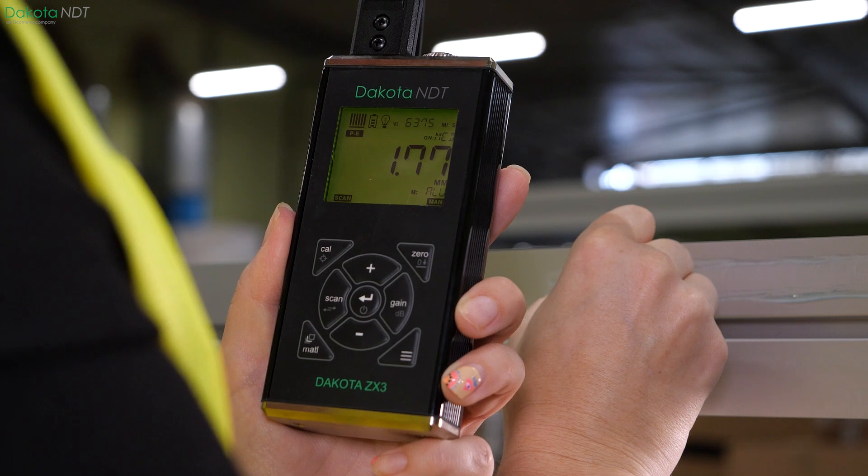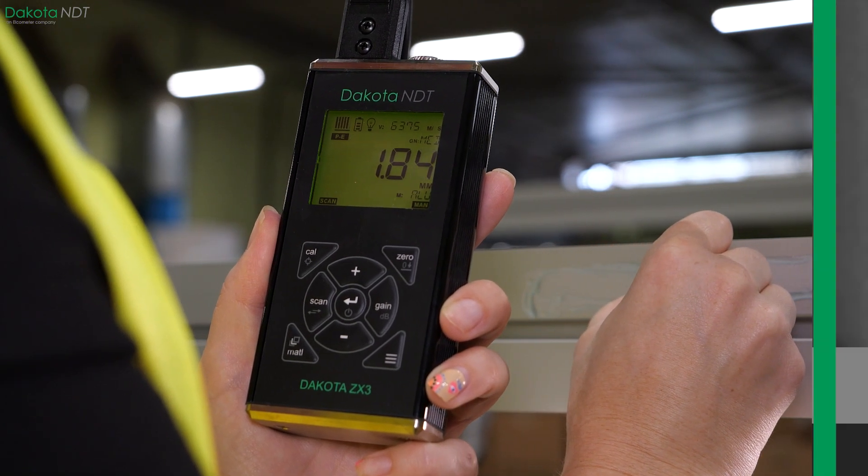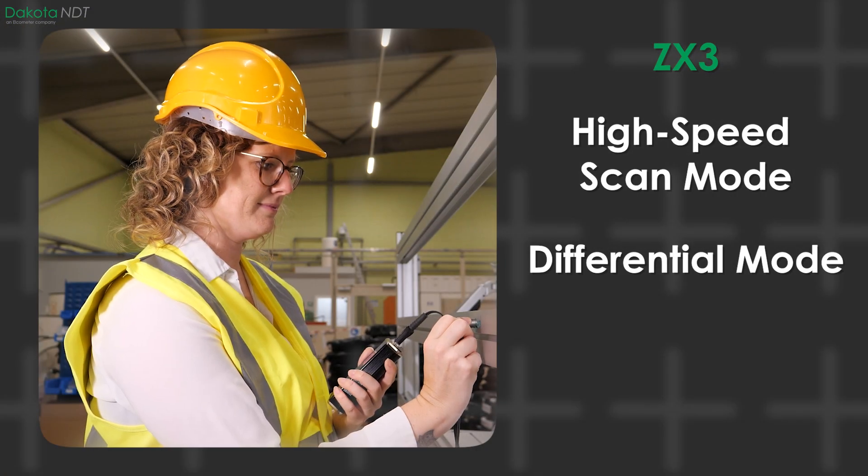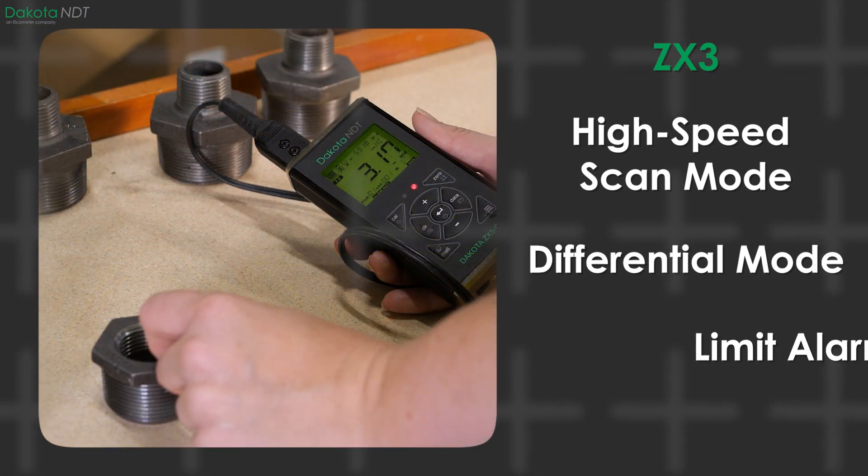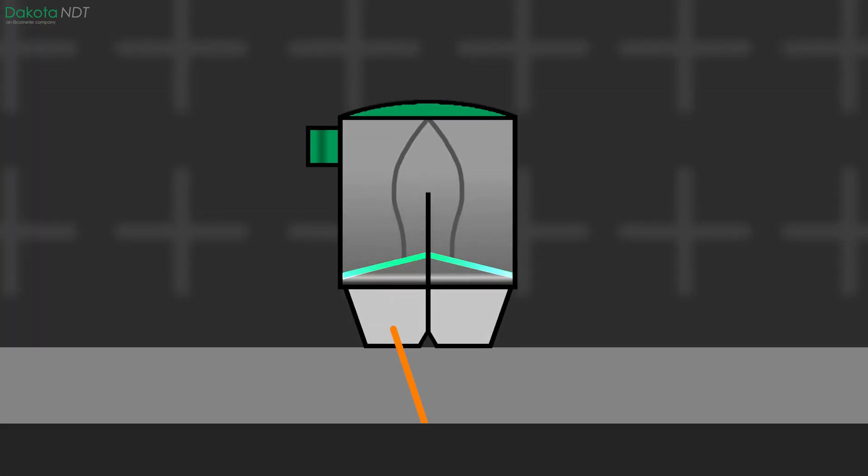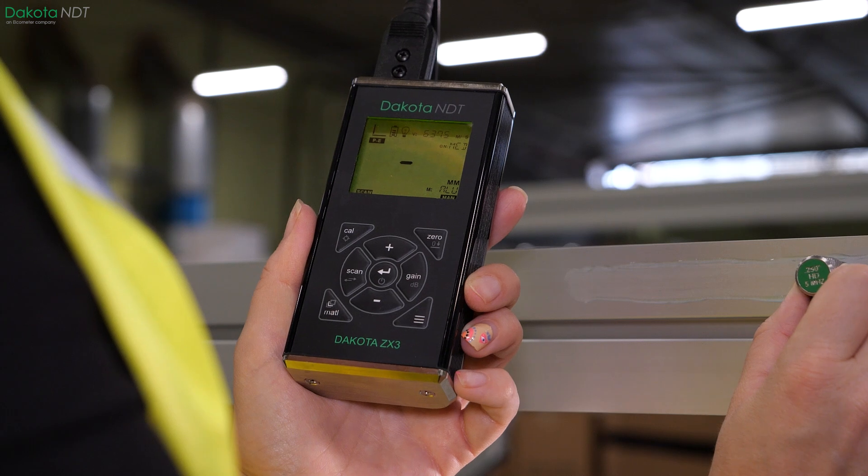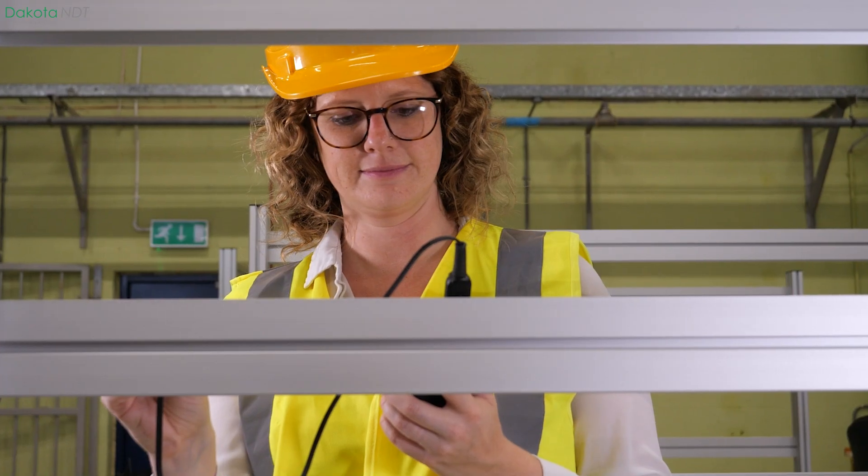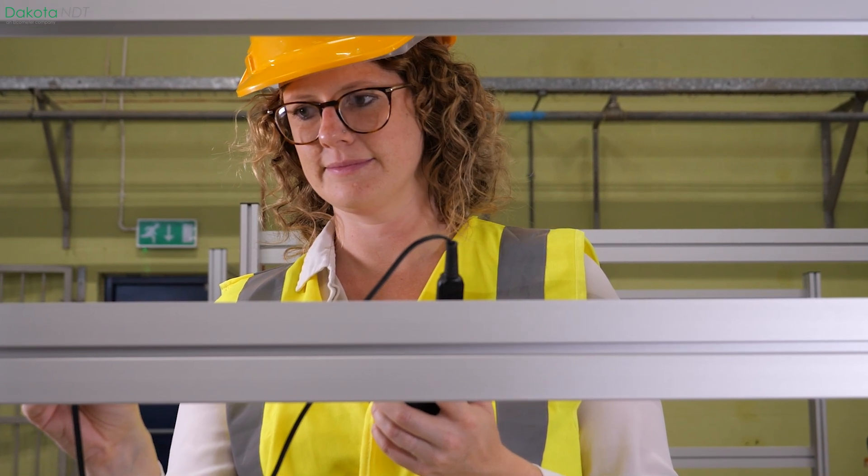The ZX3 introduces a high-speed scan mode for rapid thickness inspections and differential mode for immediate wall loss calculations and a limit alarm mode for alerting the user when measurements exceed specific thresholds. When high-speed scan mode is engaged, the gauge greatly boosts its measurement rate up to 200 hertz, allowing a user to rapidly scan a surface. Once a transducer is removed, the gauge reports the thinnest spot found, greatly increasing a user's speed when performing thickness inspections.